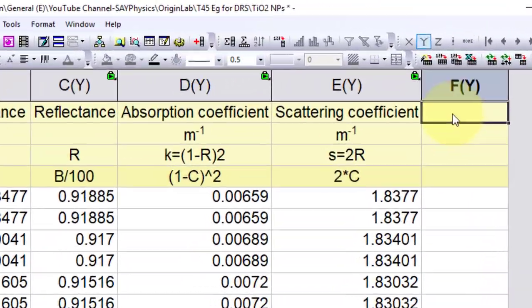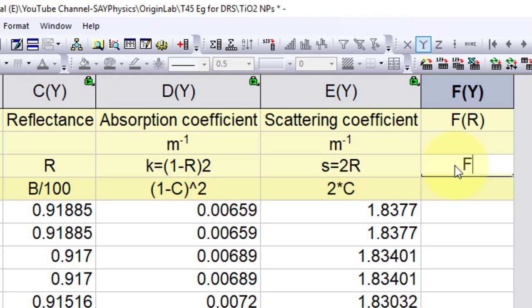Now it is time to calculate F(R), which is k over s, so we can write it as column E over column F.